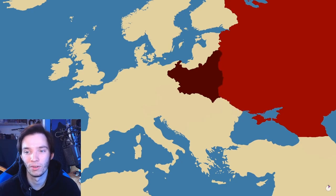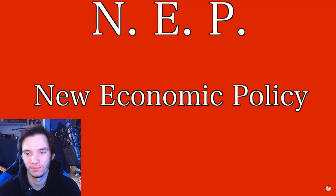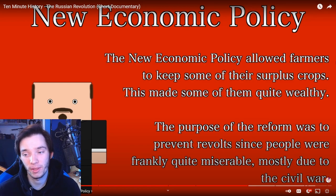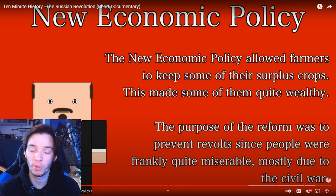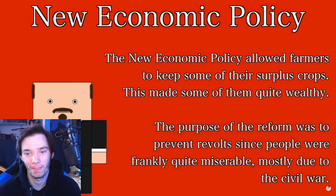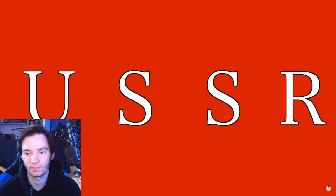Having failed to spread communism to Eastern Europe, the Bolsheviks moved to secure their position in Russia. Lenin turned to fixing Russia's economic woes by implementing the New Economic Policy, which allowed farmers to keep some of their surplus crops — making some of them quite wealthy — and permitted some private enterprise, a distinctly non-Bolshevik ideal, to help revitalize the economy. In 1922, Russia and its surrounding socialist republics — which were nothing more than puppet states — agreed to form the Union of Soviet Socialist Republics.